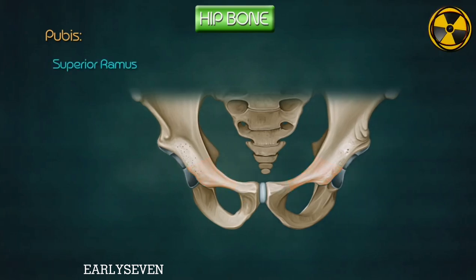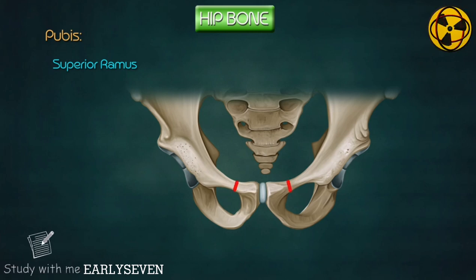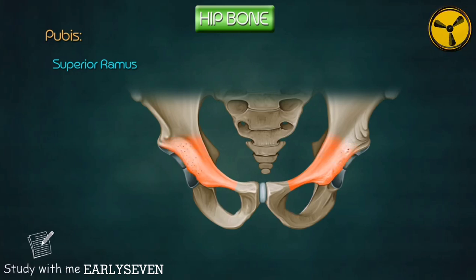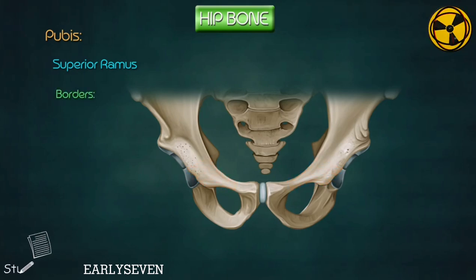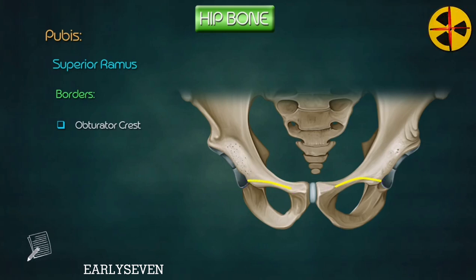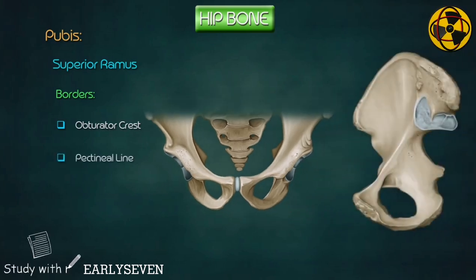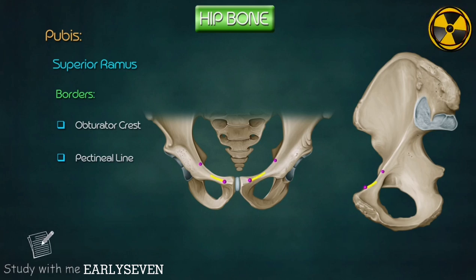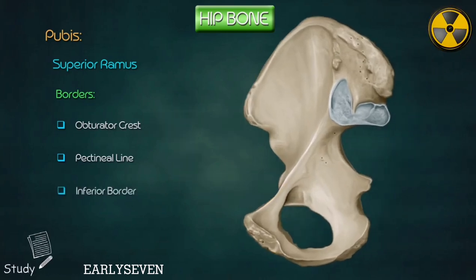Superior ramus. It arises from the superior lateral angle of the body of the pubis, passes above the obturator foramen, and unites with the ilium at the iliopubic eminence. It is triangular in cross-section, hence has three borders and three surfaces. Borders: the obturator crest is the rounded margin extending from the pubic tubercle till the acetabular cavity, separating the obturator from the pectenial surface. The pectenial line is a sharp border starting at the posterior part of the pubic tubercle, extending backwards to become continuous with the arcuate line, and separating the pelvic from the pectenial surface. The inferior border is sharp and forms the upper boundary of the obturator foramen.